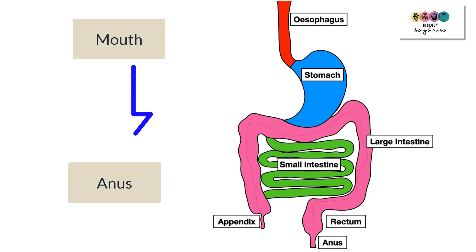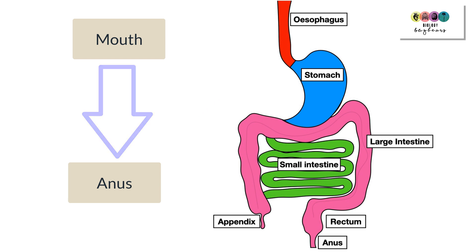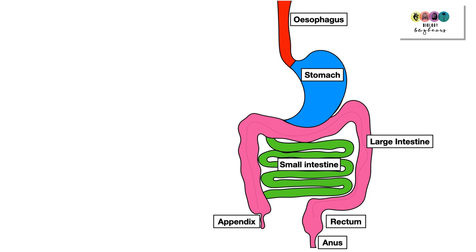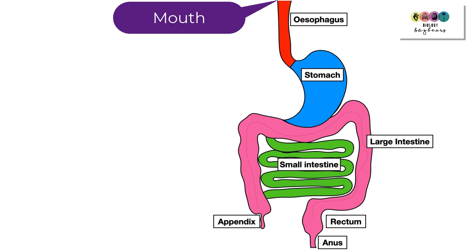Digestion takes place in the alimentary canal — a long continuous tube that begins with your mouth and ends with your anus. Starting from the top, you have the esophagus, which leads into the stomach, which leads into the small intestine, which leads into the large intestine, then the rectum, and finally out through the anus. This is the alimentary canal, or your digestive system.